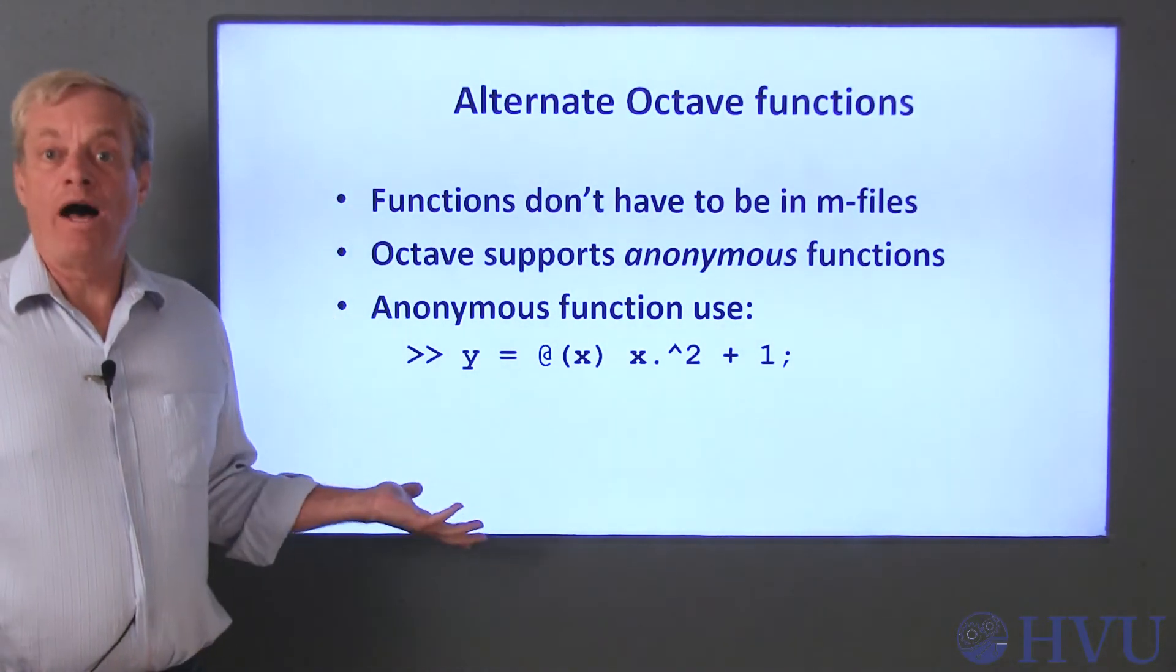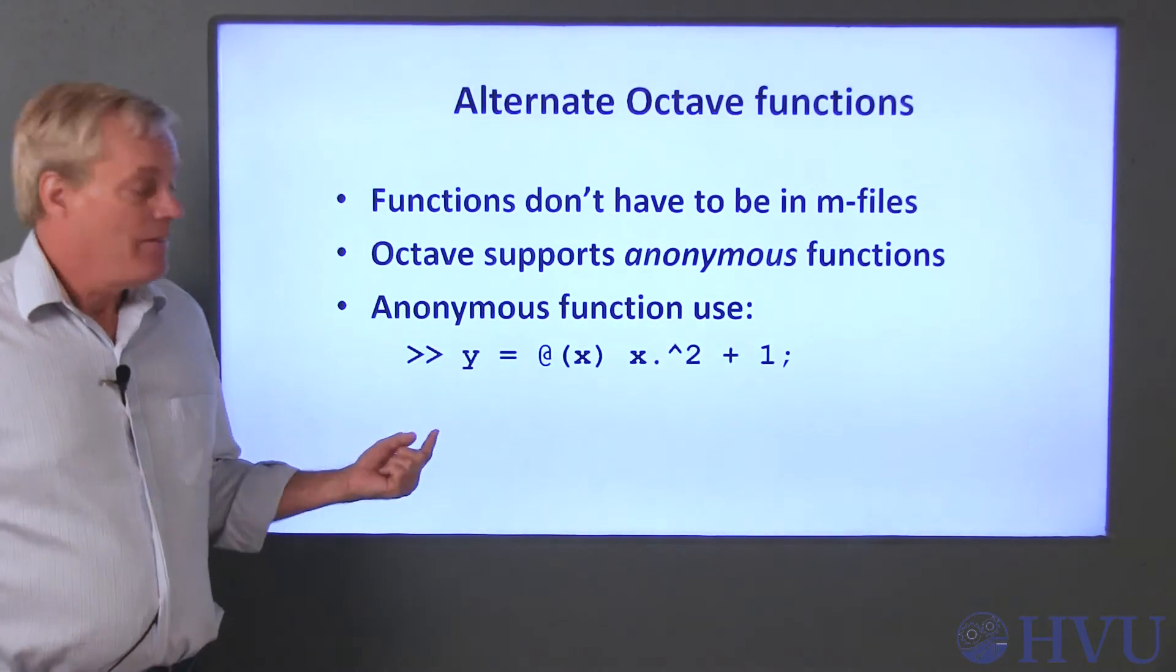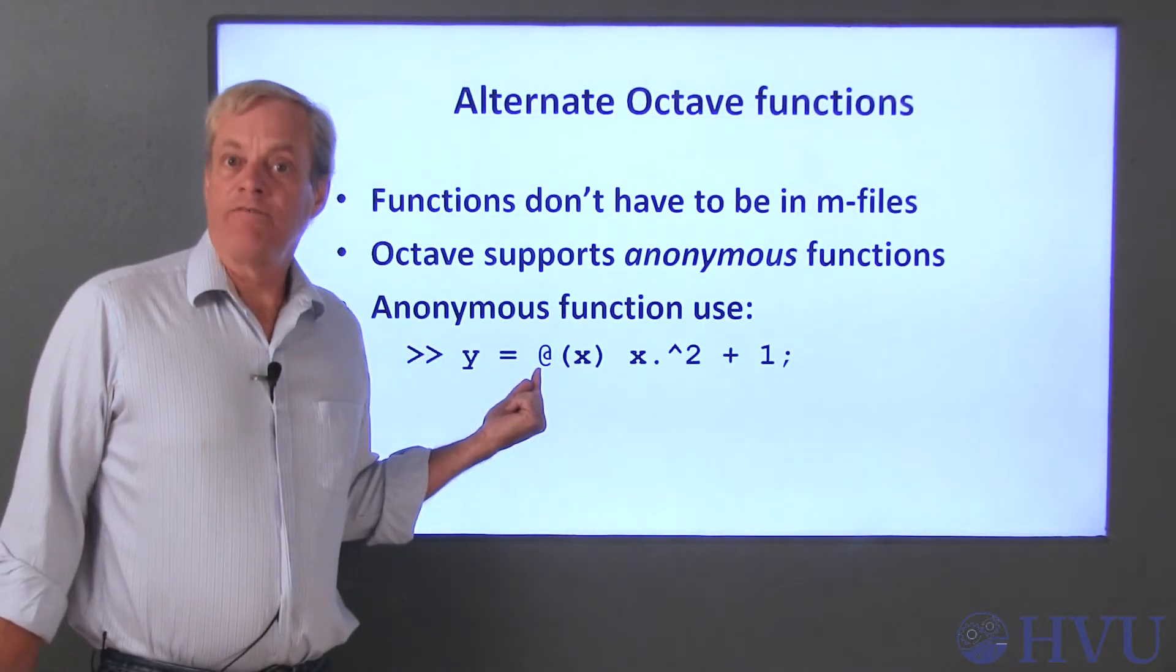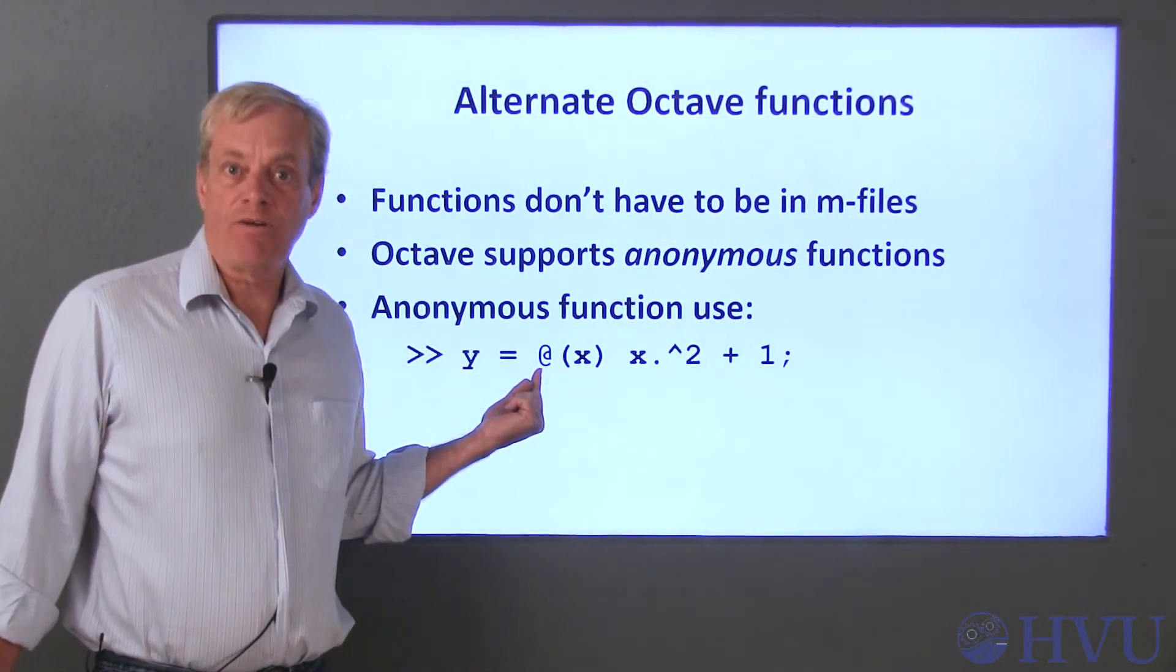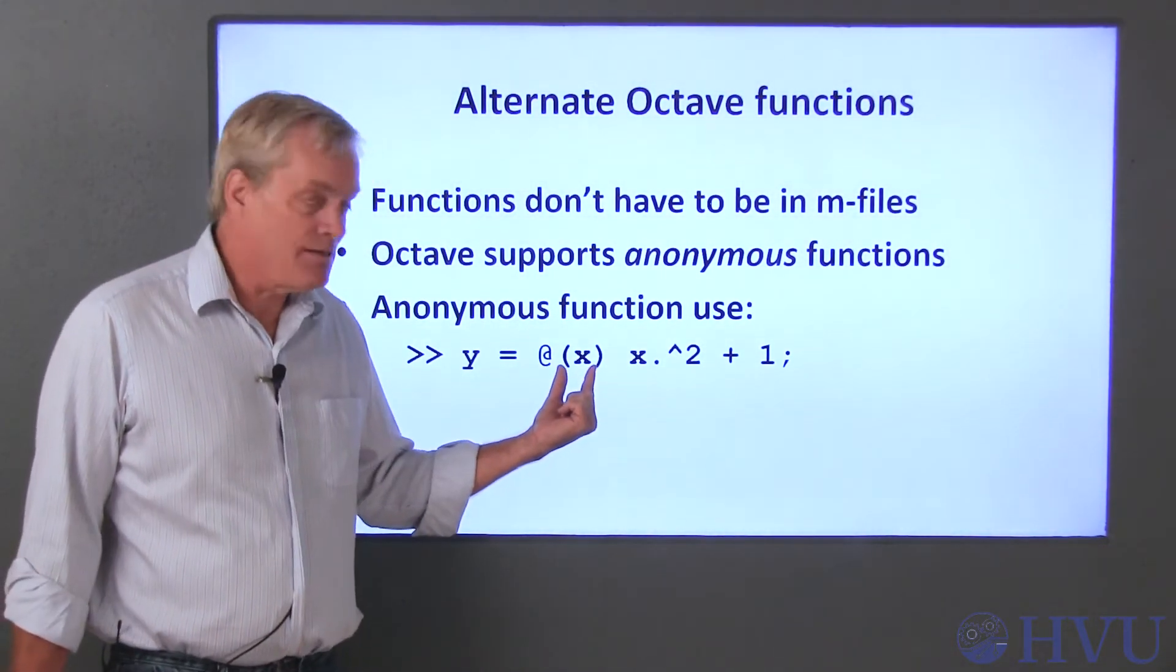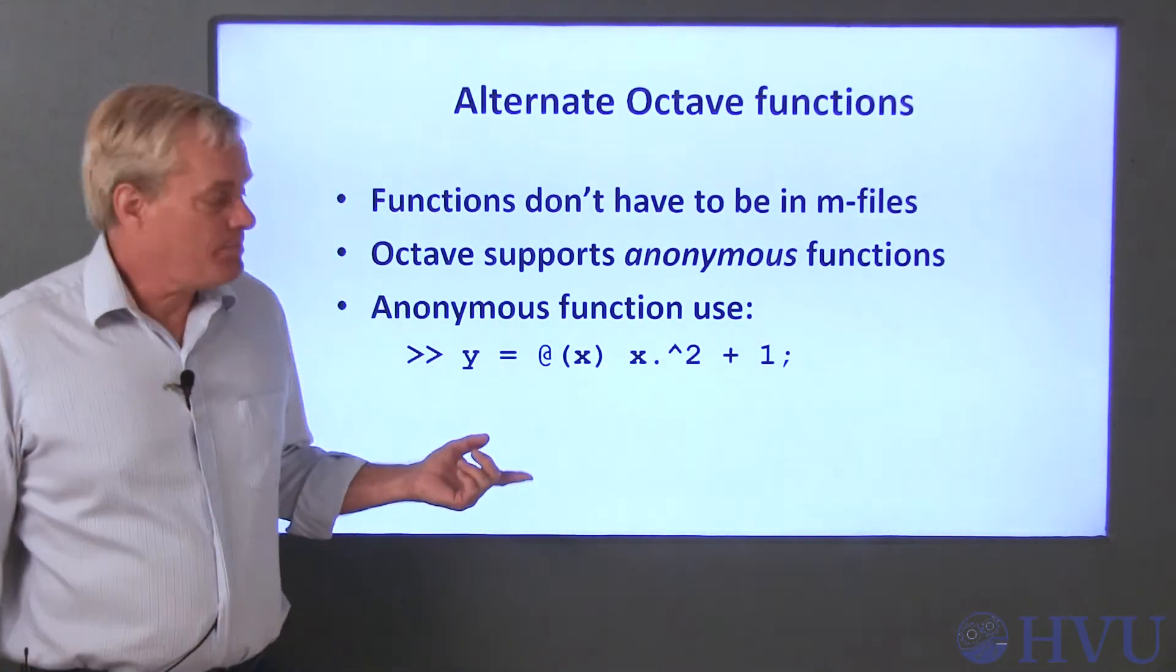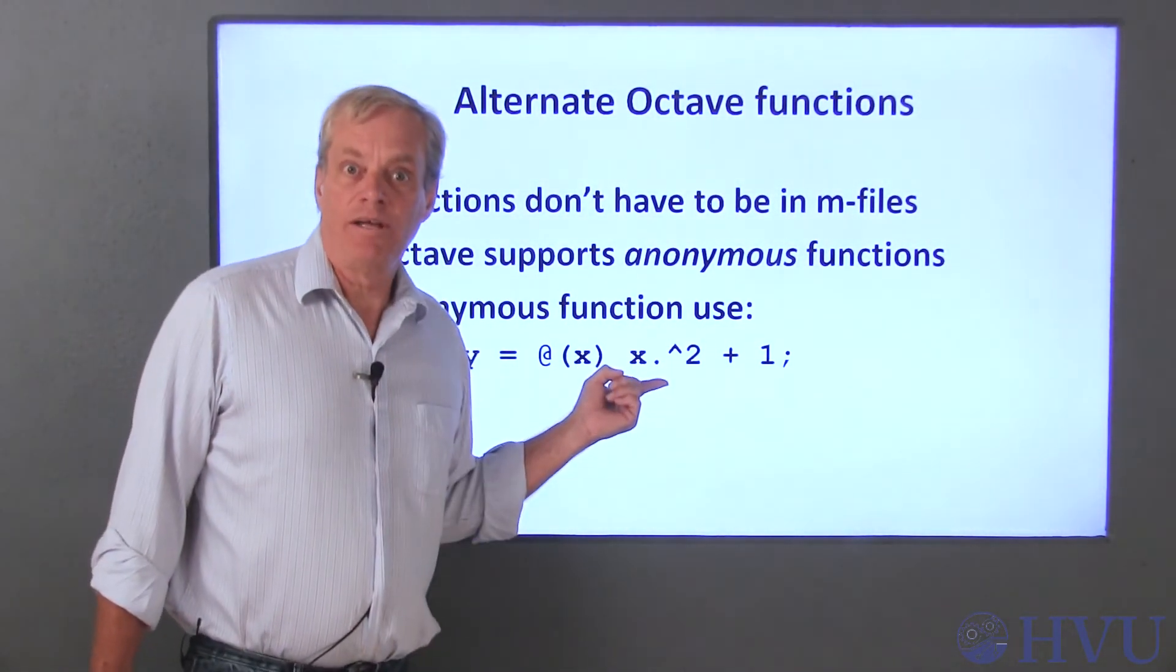For example, if the function is y is equal to x squared plus one, this will be the syntax. The at symbol tells Octave that an anonymous function is being specified. This is followed by the independent variable, in this case x, placed in parenthesis and is followed by a space. After the space, the function, x squared plus one, appears.